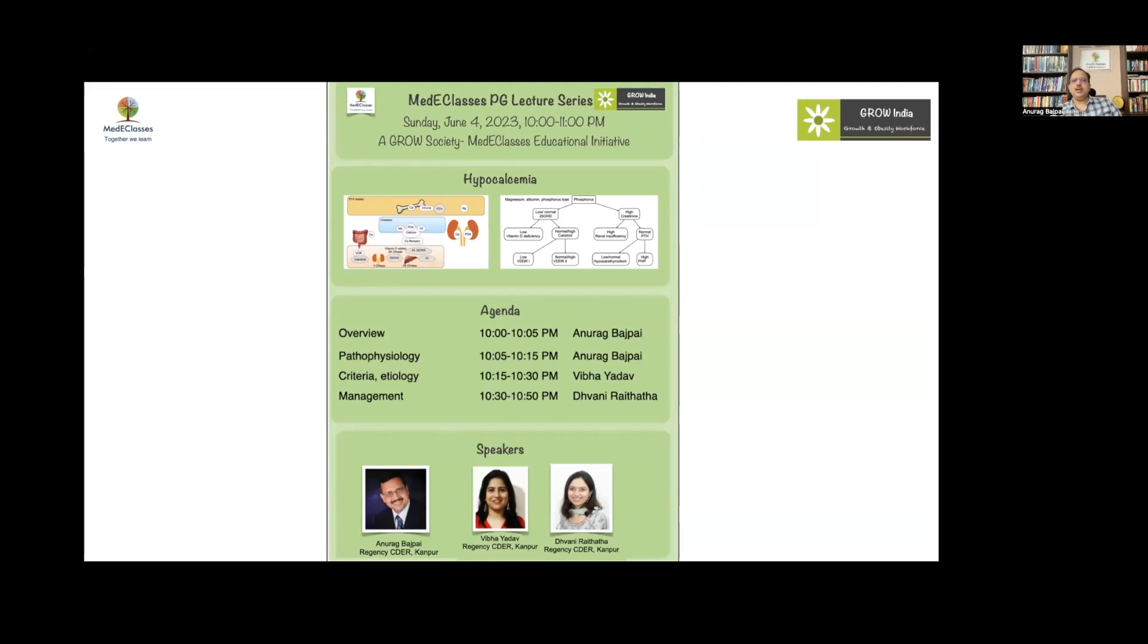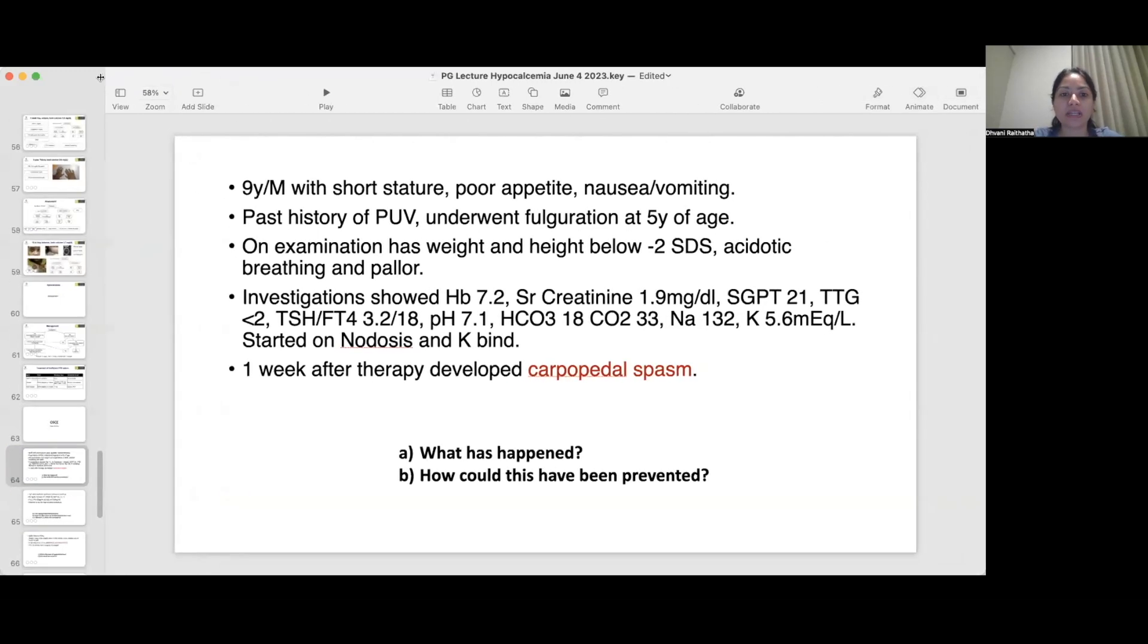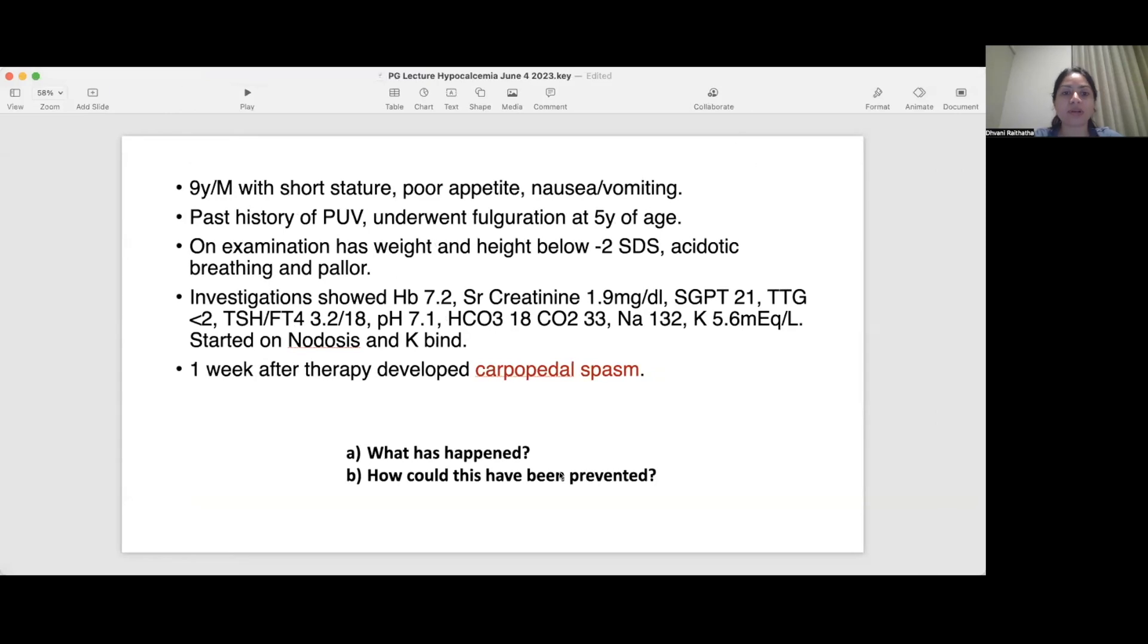We have a case: nine-year-old boy with short stature, poor appetite, nausea, and vomiting. There's a past history of poor urinary stream with history of PUV. The child underwent fulguration at five years of age. On examination the child has failure to thrive with weight and height below minus two SD, acidotic breathing, and pallor. The investigations show anemia, serum creatinine of 1.9, the other workup was essentially normal, mild metabolic acidosis pH of 7.1, bicarbonate 18. This child was diagnosed as CKD, started on Nodosis and K-Bind. One week after starting therapy the child developed carpopedal spasm.